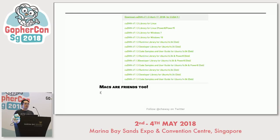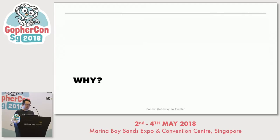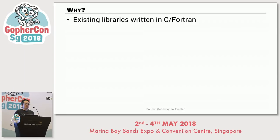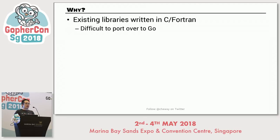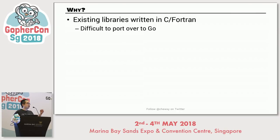We begin by asking: why do we need to write a library that wraps an external library? Why not write it in pure Go? Well, simple. Number one: there are Fortran and C libraries that exist and are quite difficult to port over. Some, like GoNum BLAS, have been ported over through the heroic effort of the GoNum team. But some libraries — due to their proprietary nature — are downright impossible to port over. Things like OpenGL, things like CUDA.